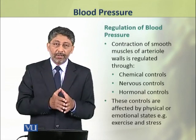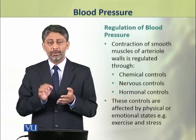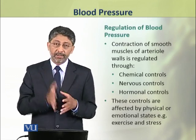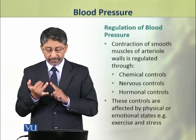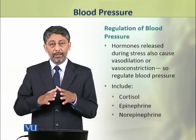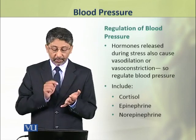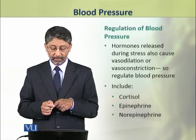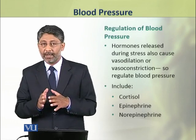The contraction of smooth muscles of arteriole walls is regulated through chemical, nervous, and hormonal controls. These controls are affected by physical or emotional states, for example exercise and stress. The hormones raised during stress also cause vasodilation or vasoconstriction, and so they regulate blood pressure. These hormones include cortisol, epinephrine, and norepinephrine.